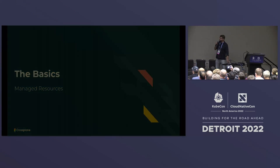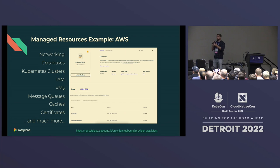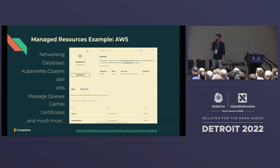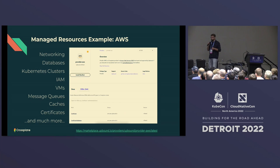Let's look at the basic functionality of managed resources in Crossplane. Crossplane can manage any infrastructure in any environment. As an example with AWS — which has something like 700 to 800 services — you can represent all of those cloud infrastructure services and bring them into the Kubernetes control plane. Anything with an API can be managed and provisioned from Kubernetes: networking, databases, certificates, queues, caches, buckets, and more.